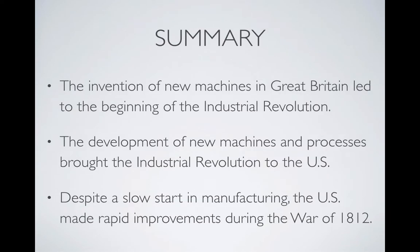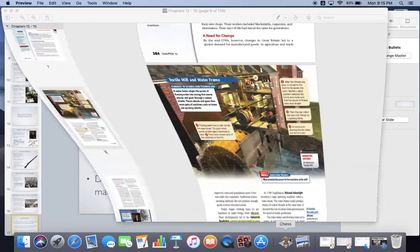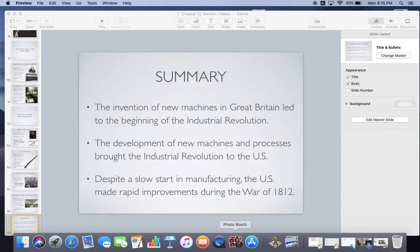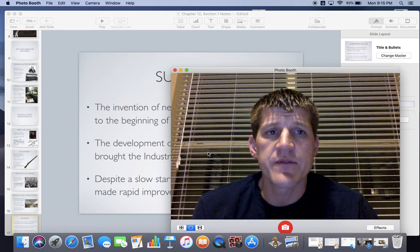There are three main things we talked about today. The invention of new machines in Great Britain, specifically in the textile industry, launched the Industrial Revolution in the mid-1700s. It was a little slower in the United States, but new machines and processes brought the Industrial Revolution here in the early 1800s, starting slowly and beginning to rapidly expand during the War of 1812. That's it for the notes today — if you have any questions, let me know. Have a great rest of your day.